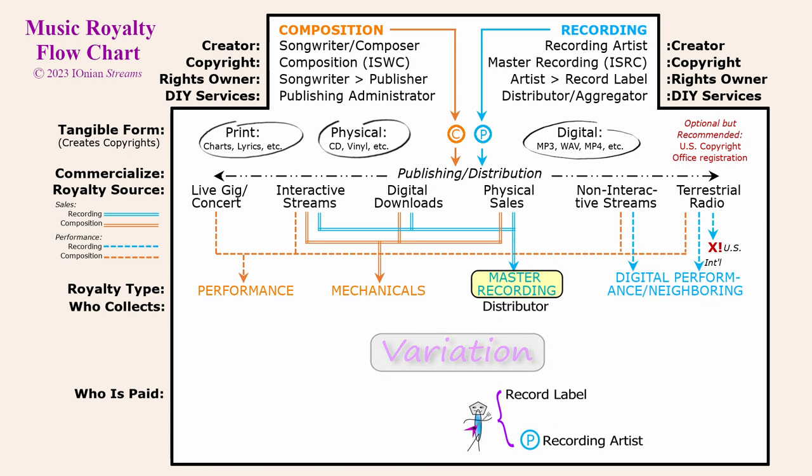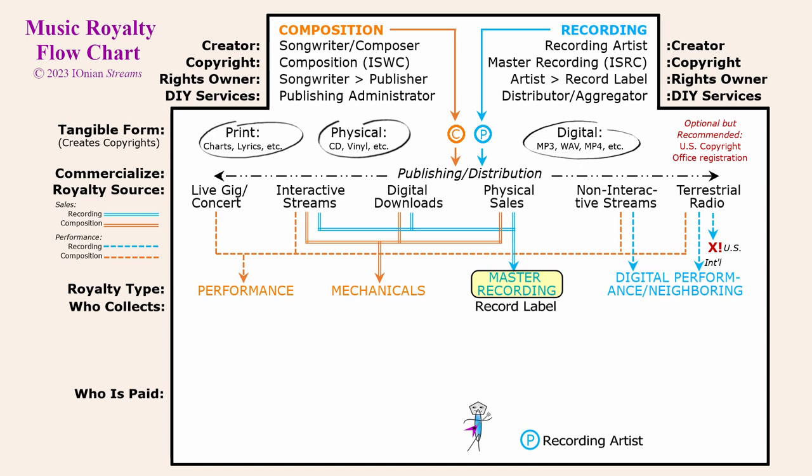The distributor then takes its commission — for example, CD Baby Standard charges 9% — and pays the rest to the record label. Under the independent musician scenario, you are the record label, so you as the record label and recording artist are paid the master recording royalties. Your distributor should also collect the master recording royalties from international sources. If you have signed with a record label, they will commonly take the place of the distributor — you will no longer be the record label, and because they acquire some or all of your recording copyright, you will receive much less or none of the master recording royalties.